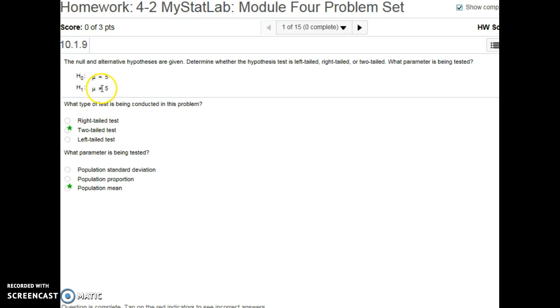If we had a greater than here, that would be a right-tailed test, where we're seeing if our sample is way out in the right tail of the normal distribution. And if we do a less than, that would be a left-tailed test. And, like I mentioned, we're testing the mean here. So population mean is our parameter being tested.